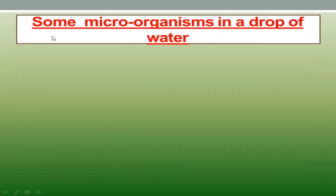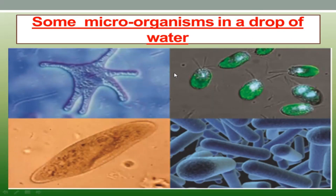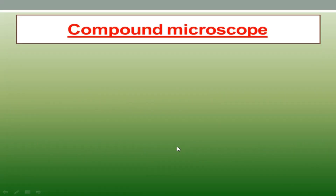Now we will look at some microorganisms in a drop of water. If you take a drop of water from some polluted water and observe it using a compound microscope, you can see microorganisms like these. These are pictures of microorganisms taken from a microscope, and these types of microorganisms cannot be observed with the naked eye.